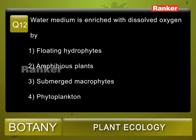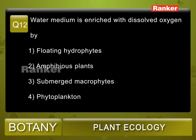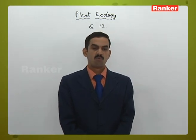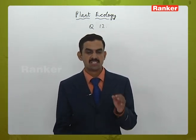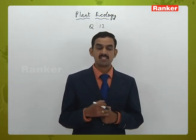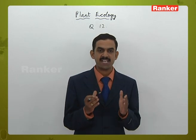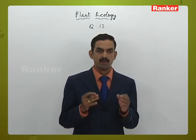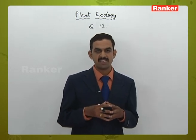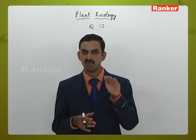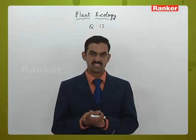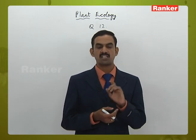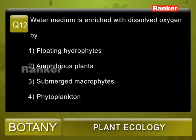Question 12: Water medium is enriched with dissolved oxygen by: 1) floating hydrophytes, 2) amphibious plants, 3) submerged macrophytes, 4) phytoplanktons. The dissolved oxygen in water is increased by macrophytes — large-sized plants completely present inside the water — that enhance dissolved oxygen levels. Correct answer: 3.